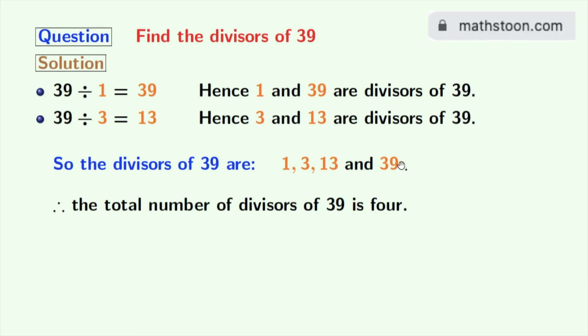Now, among these divisors, see that 3 and 13 are prime numbers because these two numbers do not have any divisors other than 1 and this number itself. So, we can say that the prime divisors of 39 are 3 and 13.